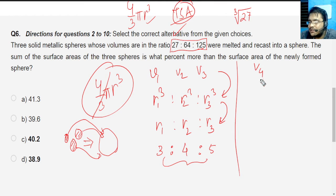So 125 plus 64 is 189, 189 plus 27 is 216. So 216 is the volume of the bigger sphere. Obviously the radius of this one will be, if you do your mathematics, you'll be able to see 6³ is 216.